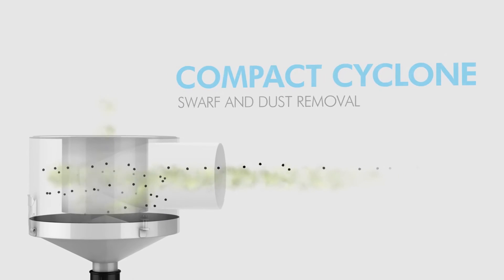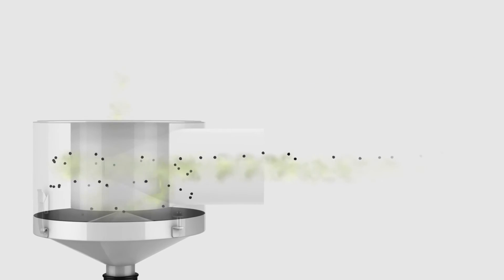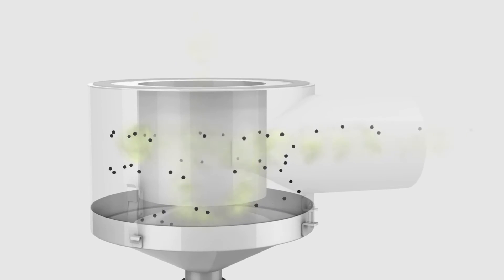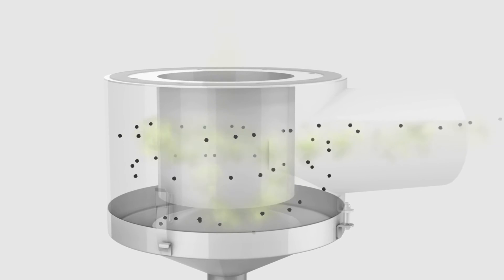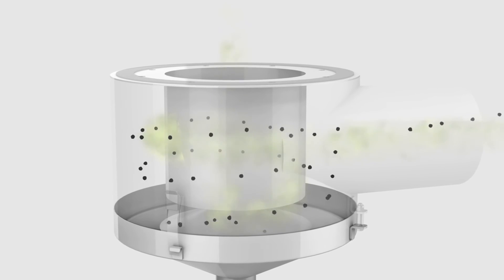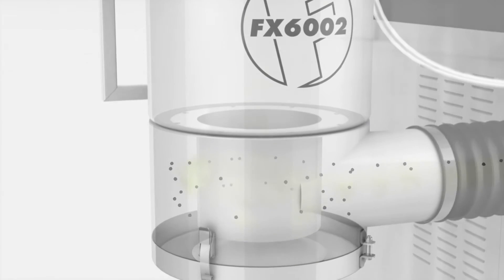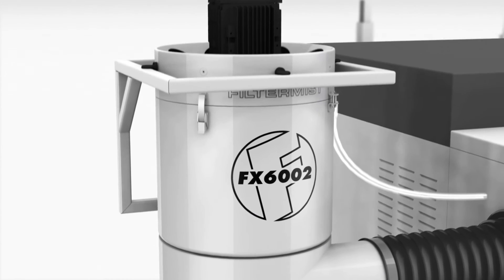The system is attached to the inlet of the Filter Mist unit and the contaminated air passes through it. The low pressure area within the separator encourages the heavier solid particles to fall to its base, where they can be easily extracted. Oil mist is then removed by the Filter Mist in the usual way.